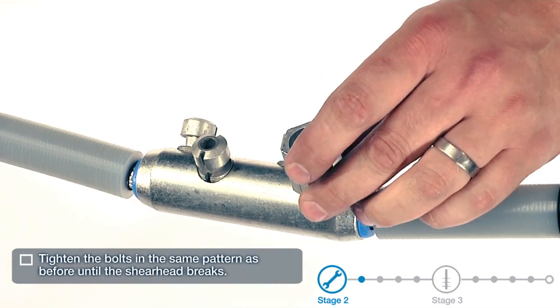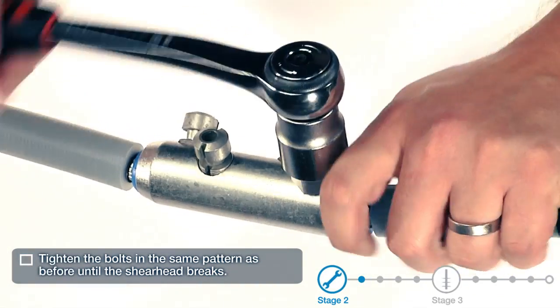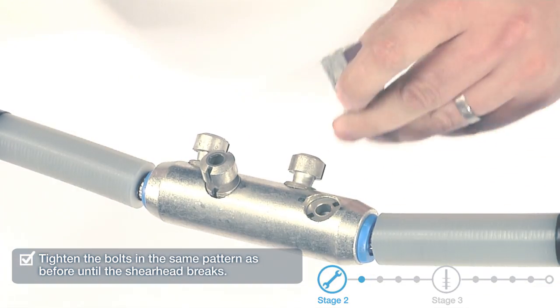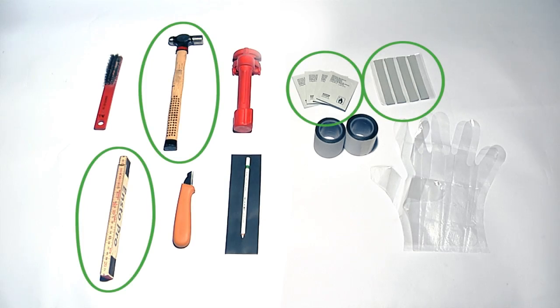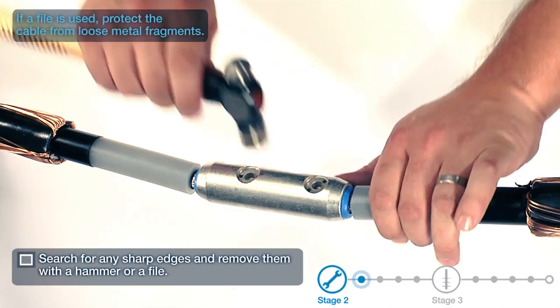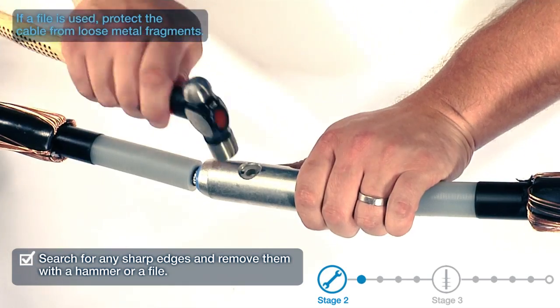Tighten the bolts in the same pattern as before until the shear head breaks. Search for any sharp edges and remove them with a hammer or a file. If a file is used, protect the cable from loose metal fragments.